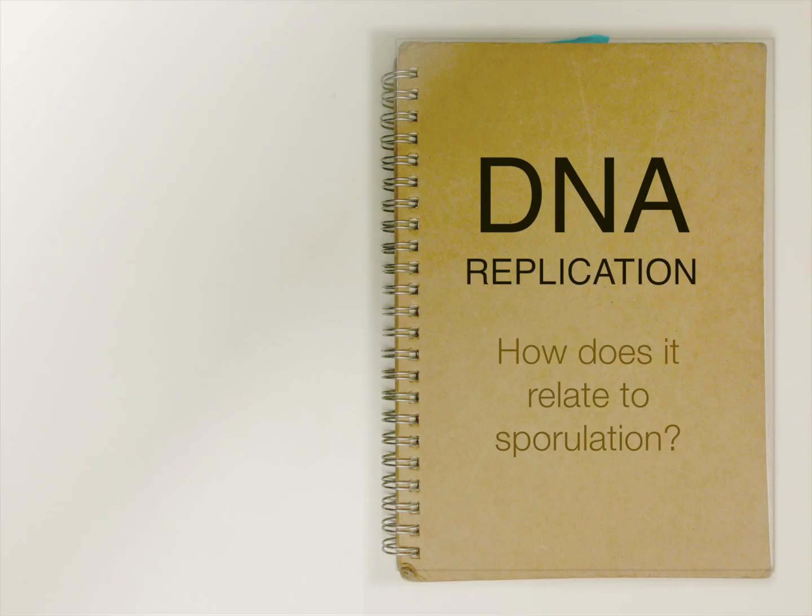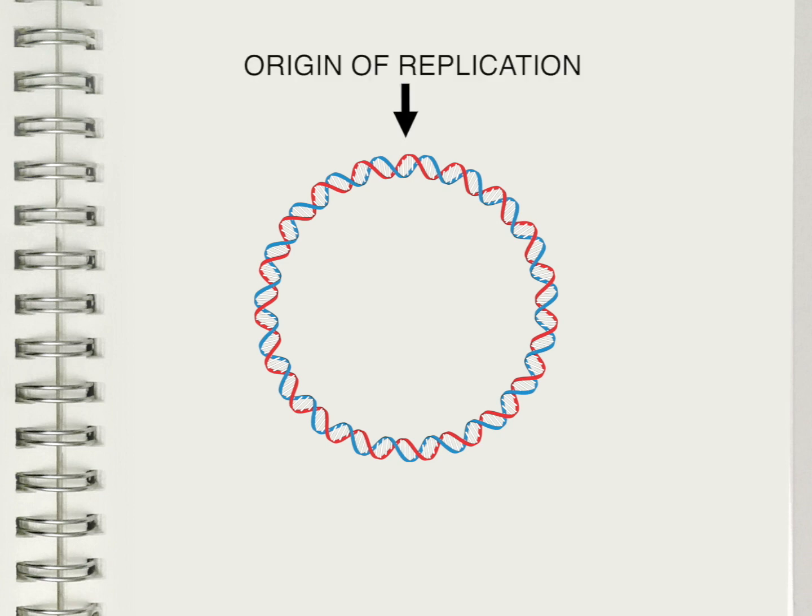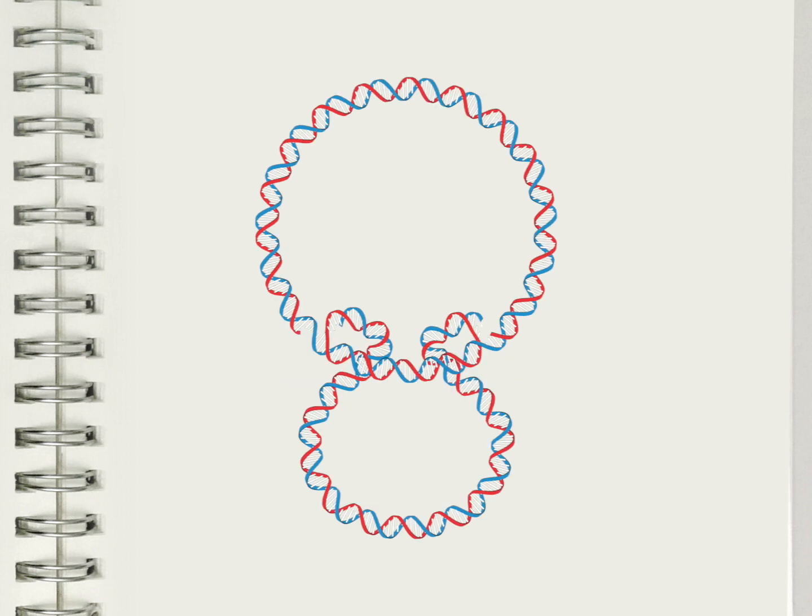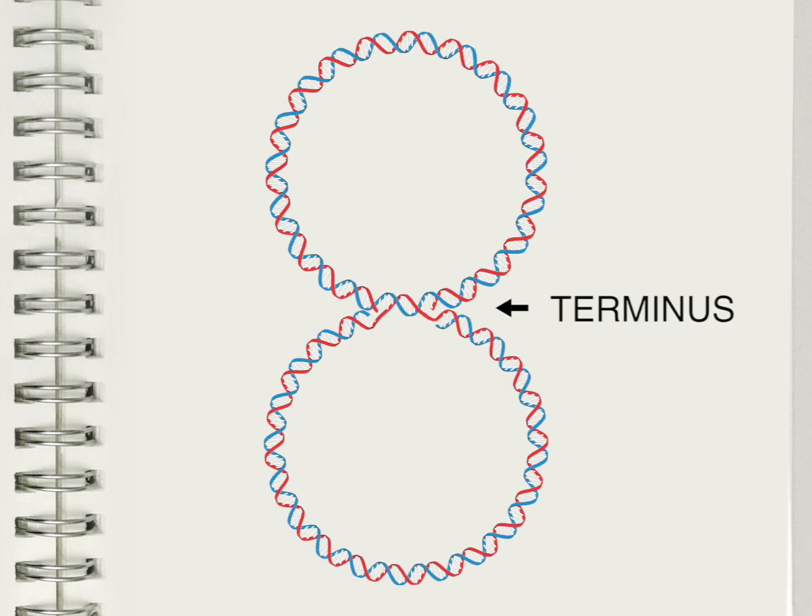How can DNA replication affect Spo0A activity? Replication of the circular bacterial chromosome starts at a single point, called the origin of replication. It then goes around the circle till the two replication points meet at the opposite end of the chromosome, the terminus.